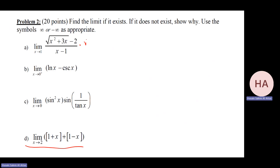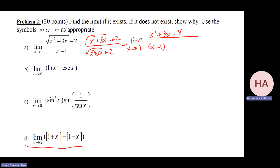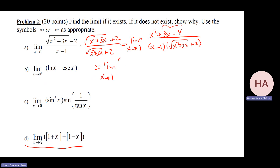Rationalize. The limit as x goes to one gives x squared plus three x minus four over x minus one times the square root of x squared plus three x plus two. Factoring the numerator: x plus four times x minus one. After cancellation, substitute x equals one: five over the square root of one plus three plus two, which is five over the square root of four, equals five over two.